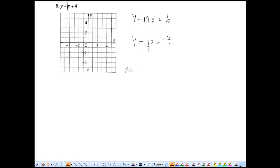So your slope is 1 over 1, you're rising 1, you're running 1. Your y-intercept is negative 4. So first plot your y-intercept, negative 4.